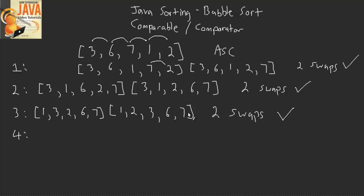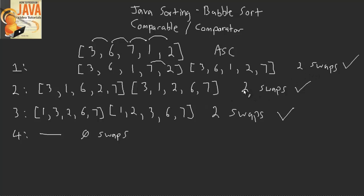So it goes to the last iteration. Is one less than two? Yes. Is two less than three? Yes. Is three less than six? Yes. Is six less than seven? Yes. So no swaps are done — that means we are complete. The bubble sort is done and our list is now sorted. That was about six different swaps across four iterations through the bubble sort.